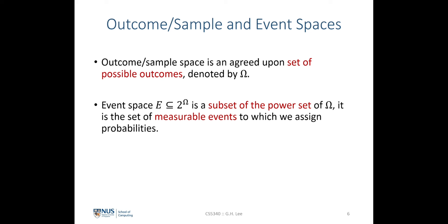Next, we look at the definition of the event space, which we denote as E. It is a subset of the power set of omega — we denote the power set of omega as 2 to the power of omega. This represents all the possible combinations from omega, and the event space is a subset of all those combinations. It is the set of measurable events to which we assign probabilities.